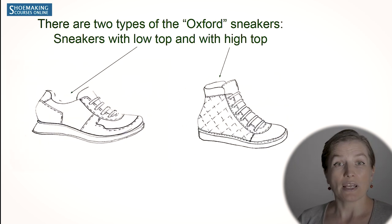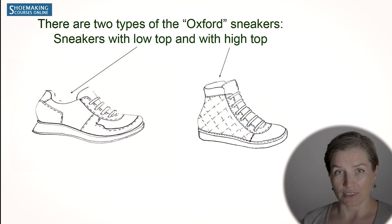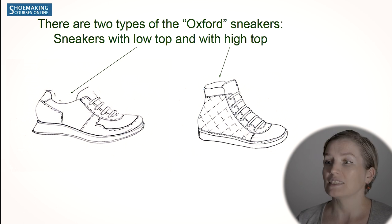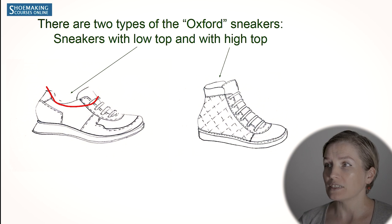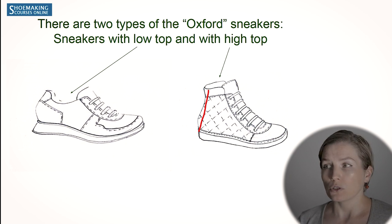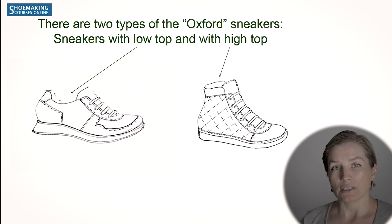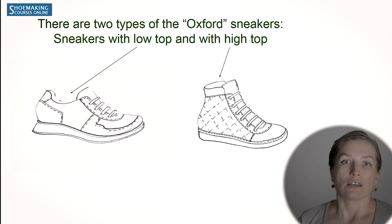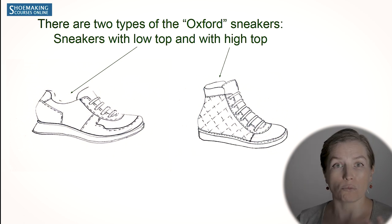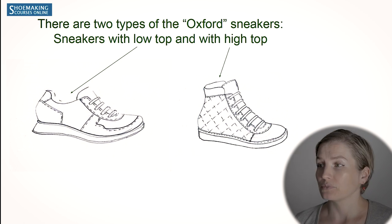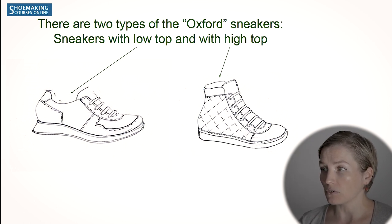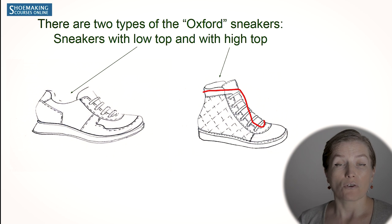We have two types of sneakers based on Oxford construction. We have sneakers with low top, and we have sneakers with high top. To create sneakers with high top, you also need to know some rules of construction from boot construction. But the main thing — how to create the quarters of the sneakers — comes from the construction of Oxford shoes.